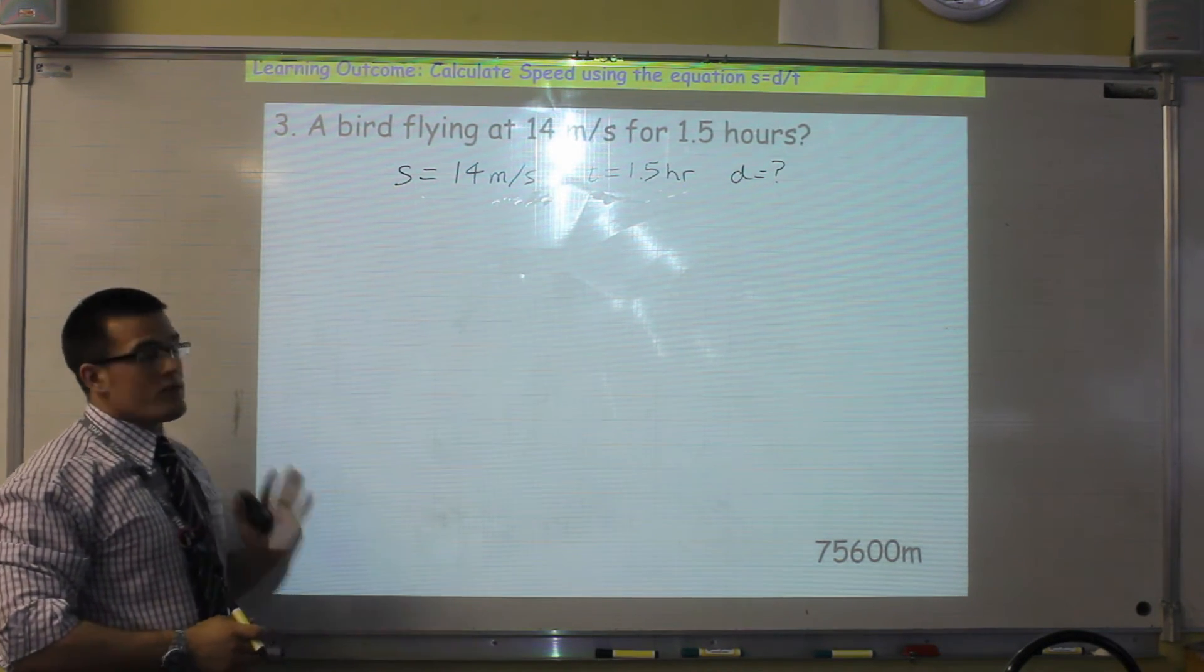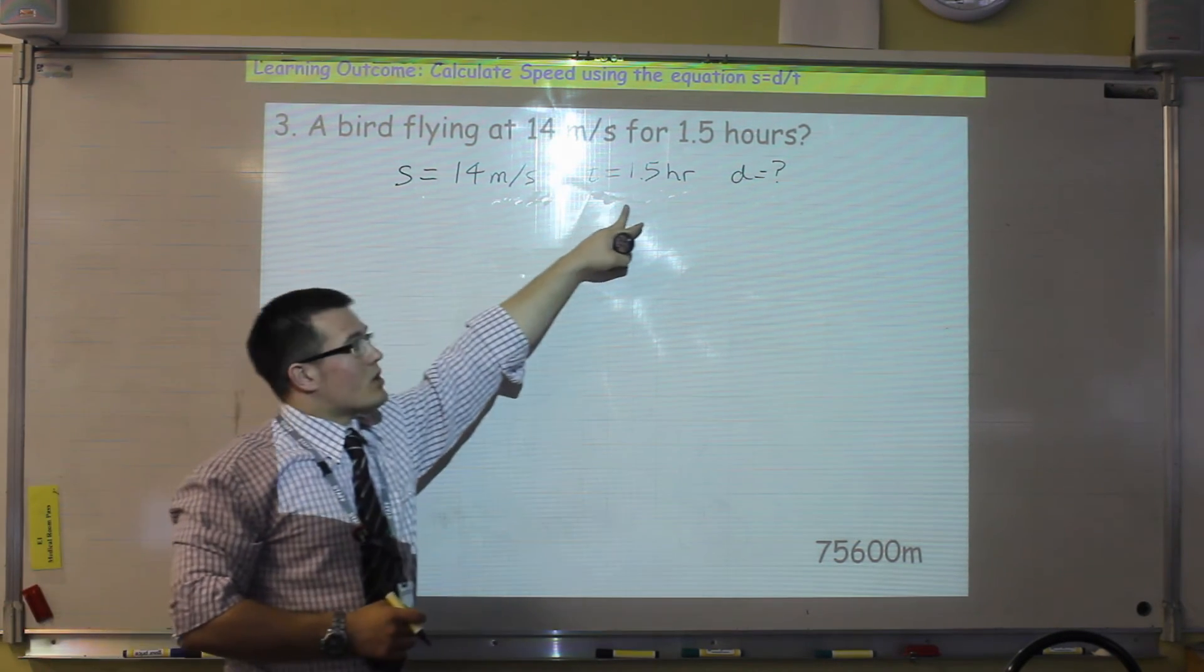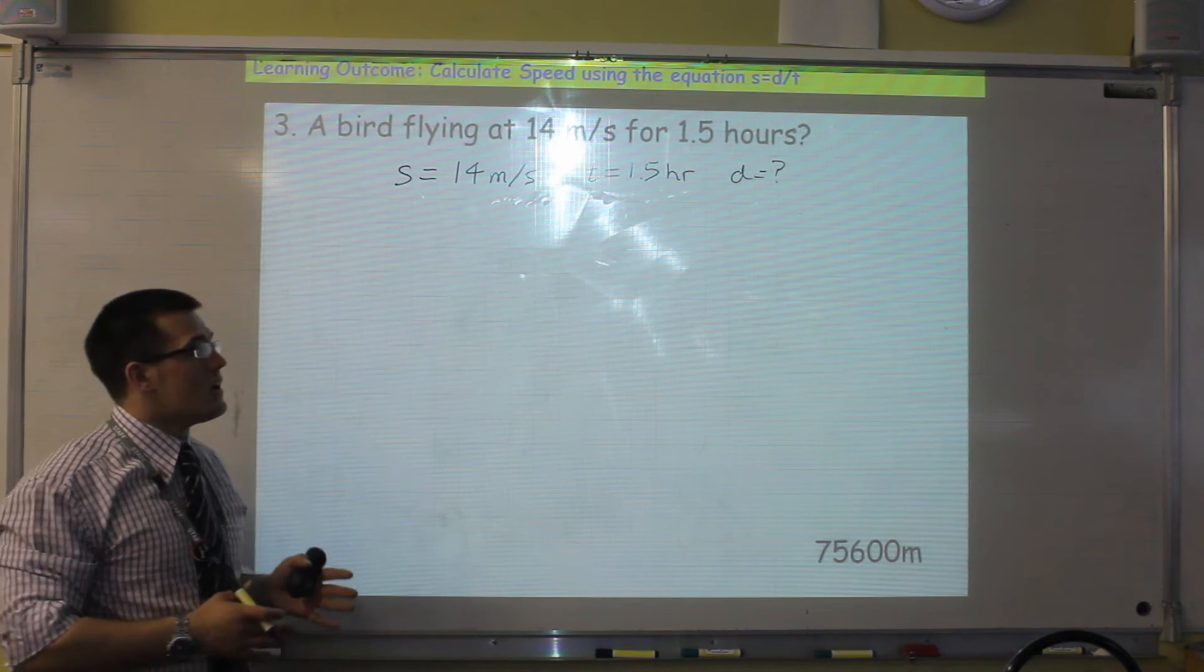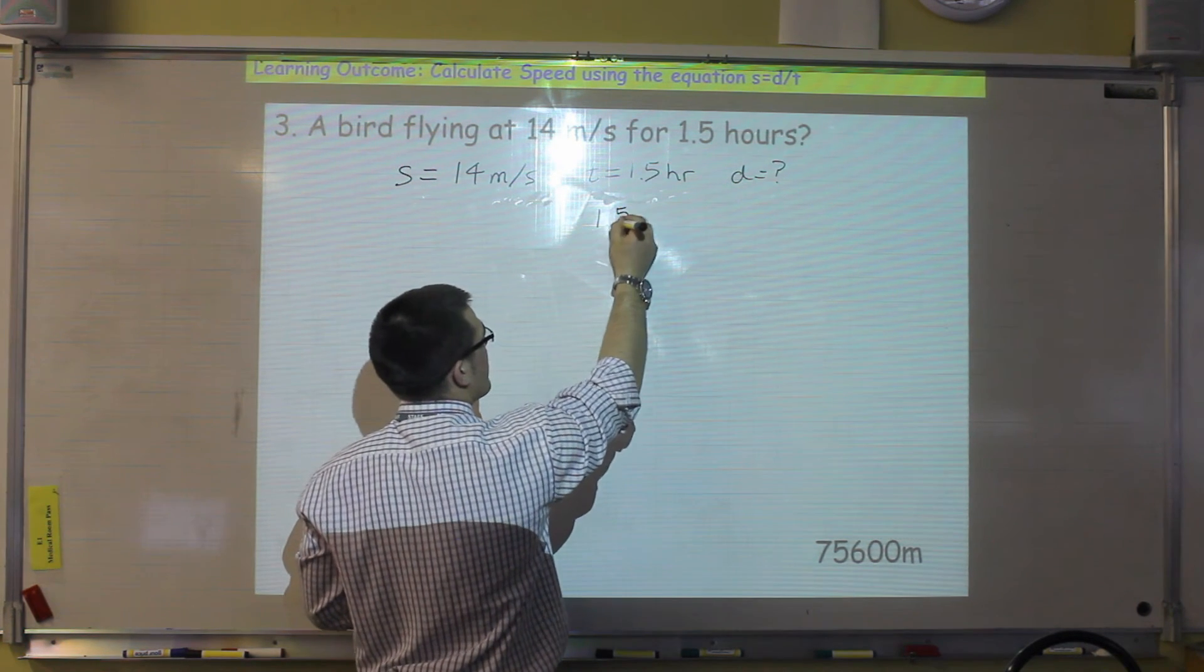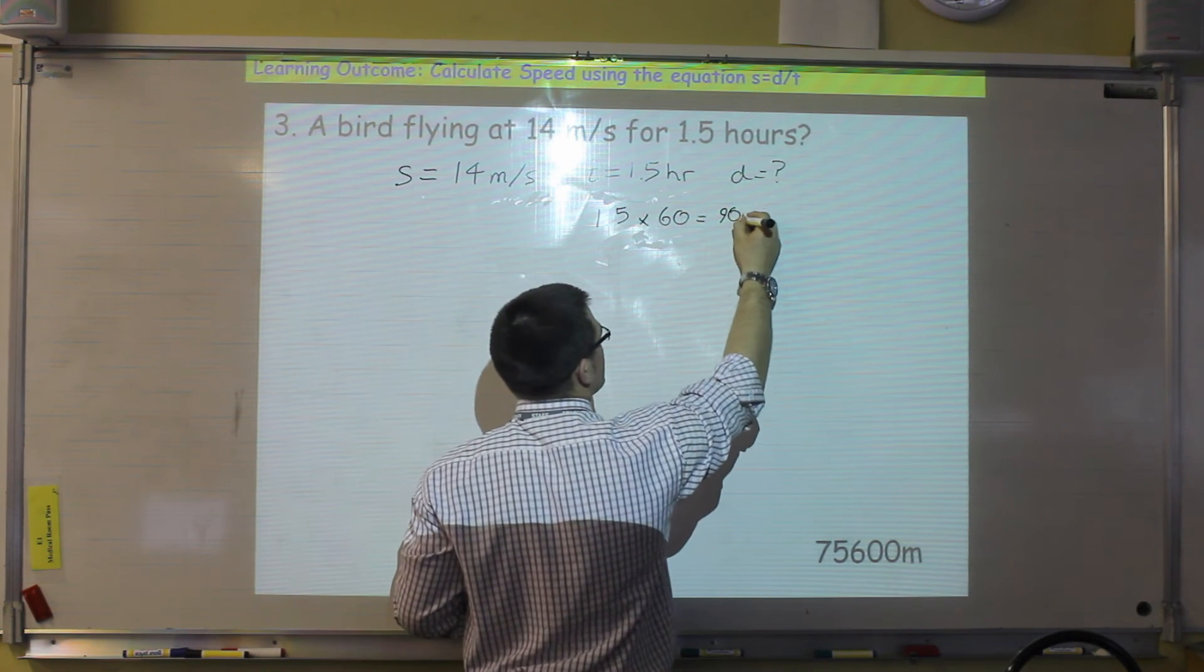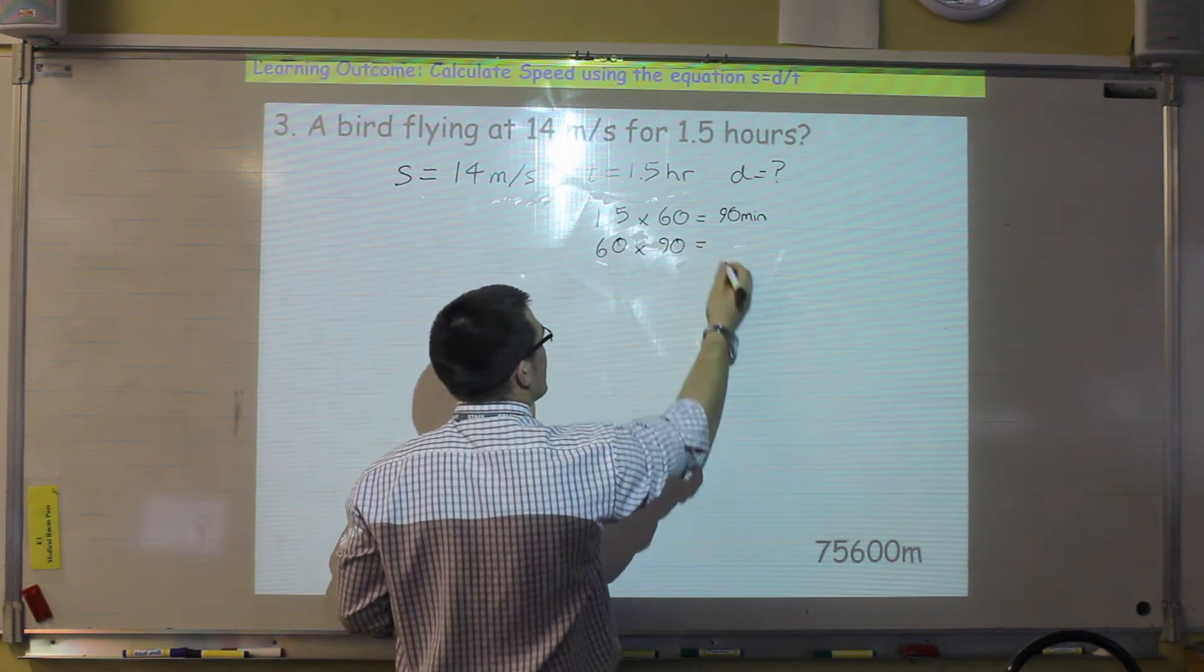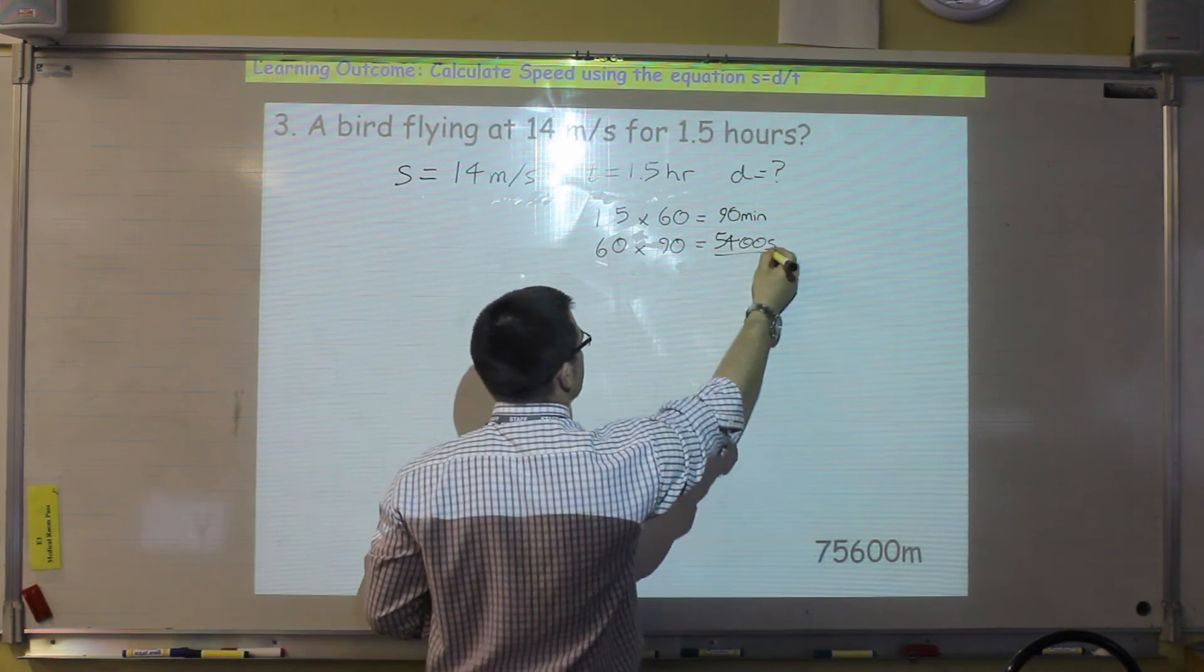Now, we need first to make sure that all of our units are correct. So meters per second is correct for speed, but we can't use a time in hours. So we've got to convert that to seconds. So there are sixty seconds in a minute, and there are sixty minutes in an hour. So first we need to turn that into minutes. So the way we do that, is 1.5 times sixty, will give us ninety minutes in total. And then we do the same, multiply by sixty again. This time our ninety minutes. And we will get 5,400 seconds as our time.